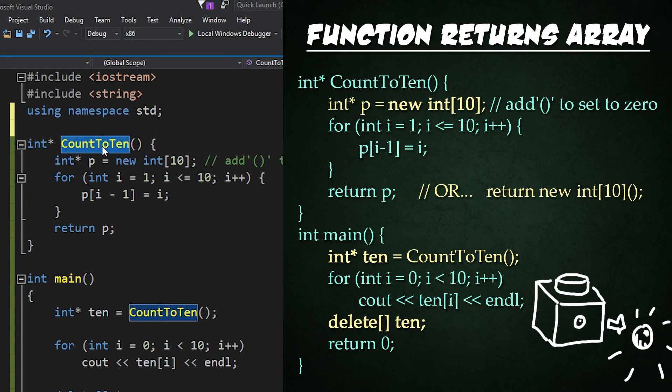So here we have count to 10 as our function. We create a pointer called P and set it to a new dynamic array of size 10 right here, and then we go ahead and set the values within it to all be I, basically. So it's going to count 1 to 10, and the values we're accessing are 0 through 9.